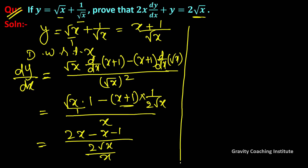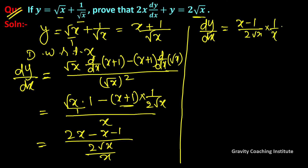So dy upon dx equals x minus 1 upon 2 root x, into 1 upon x, so dy upon dx equals x minus 1 upon 2x root x.